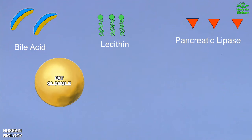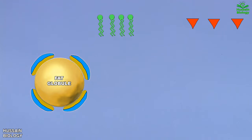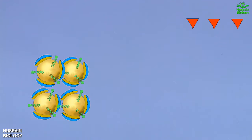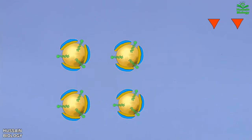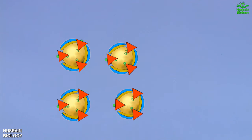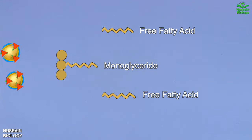In the small intestine, the fat globule or triglyceride is not directly acted upon by pancreatic lipase — rather, the fat droplet is emulsified first. Bile acid comes in and binds with the fat globule, then lecithin also binds with it, leading to emulsification. This produces small fat droplets or emulsion droplets from the big ones, increasing the total surface area. Pancreatic lipase then binds with these small droplets and starts hydrolyzing them, removing terminal fatty acids from triglycerides to yield two free fatty acids and one monoglyceride.